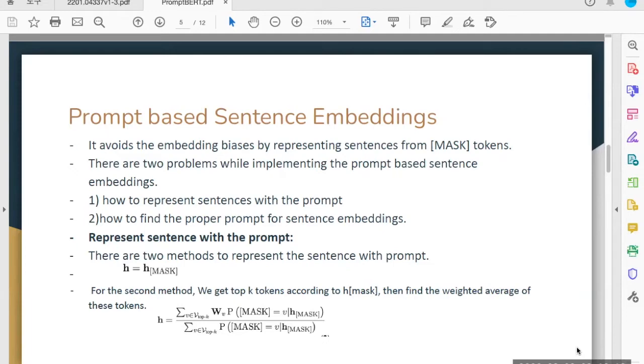Firstly, due to the sentence embedding from averaging tokens, it still suffers from biases. Secondly, weight averaging makes it hard to fine-tune in downstream tasks. So for these reasons, we use the sentence with the prompt by the first method.